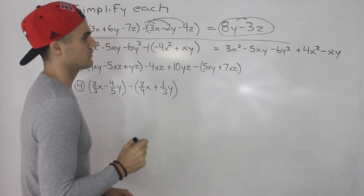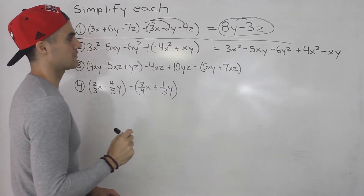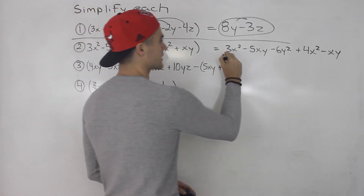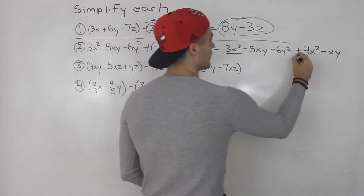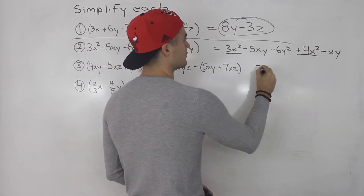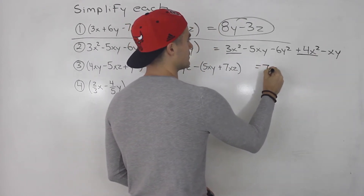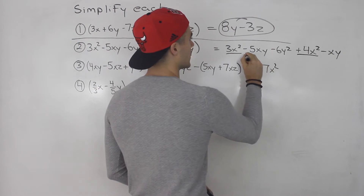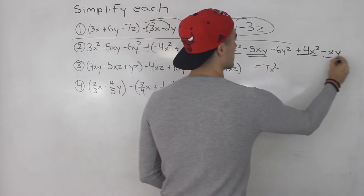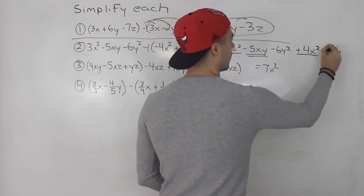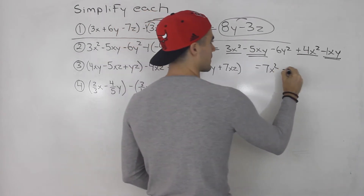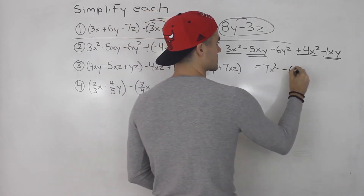From here you simply have to collect the like terms. So 3x squared and 4x squared are like terms — that gives us 7x squared. And we got minus 5xy minus 1xy — there's a 1 in front there — that gives us minus 6xy.